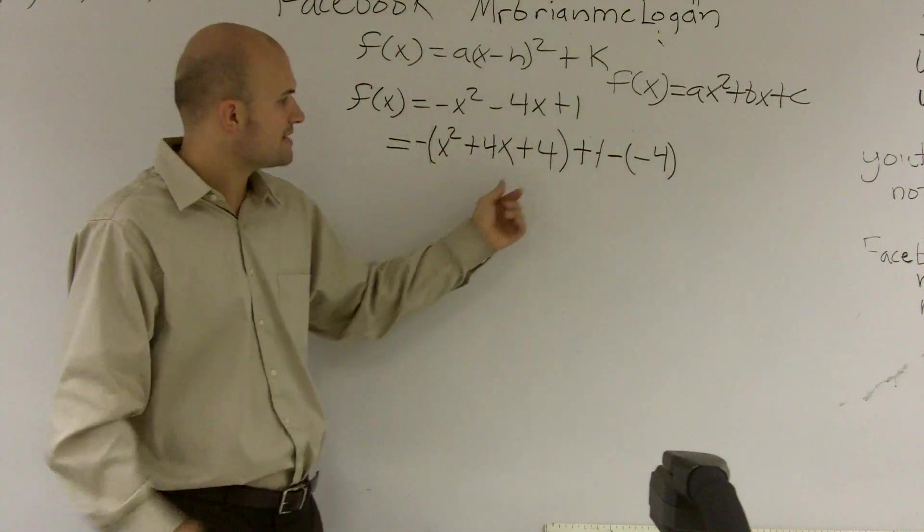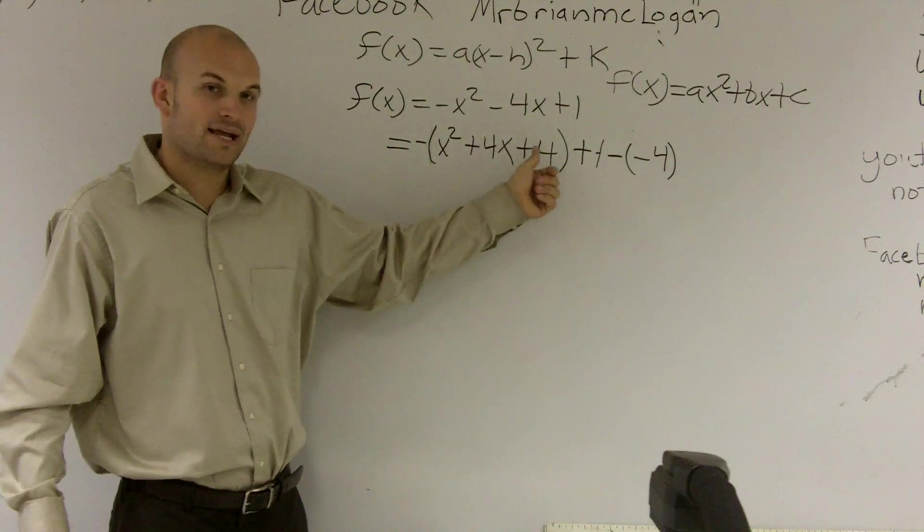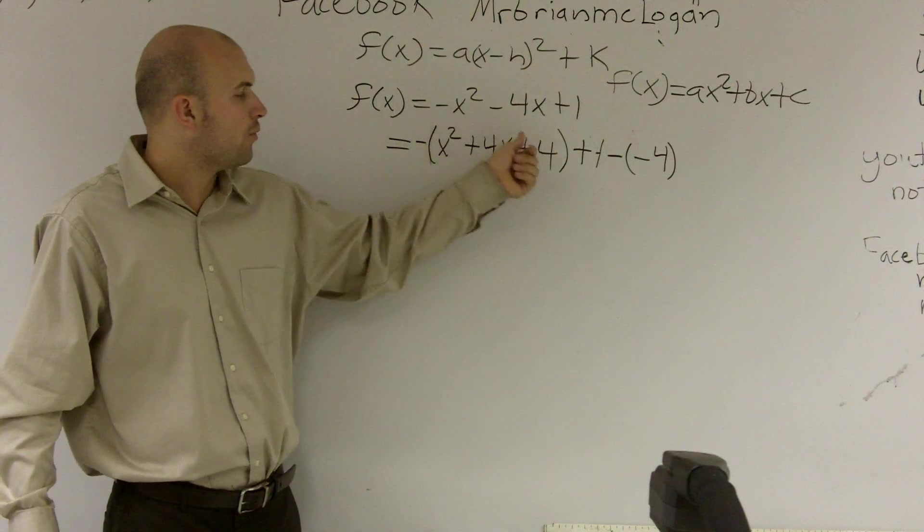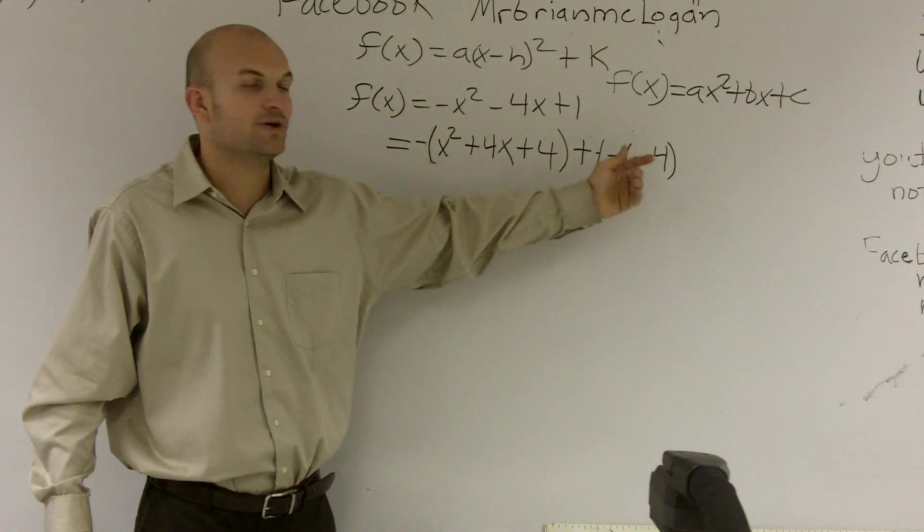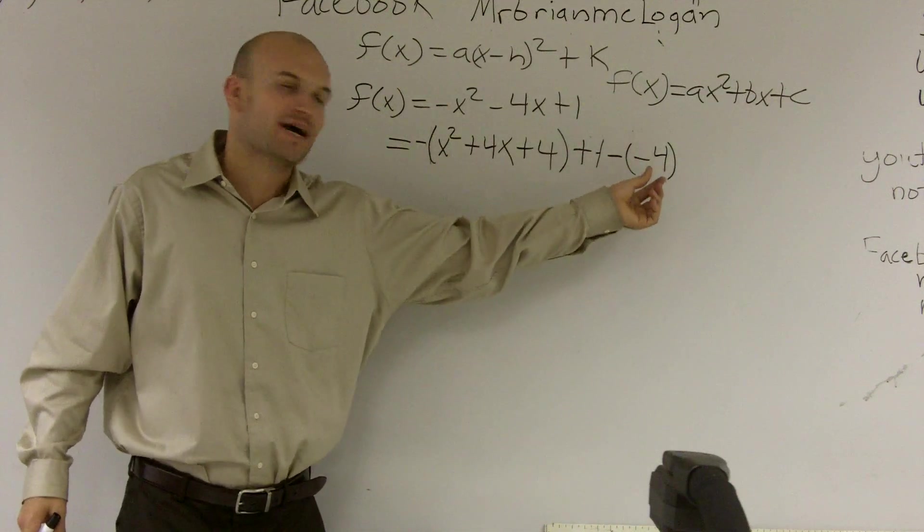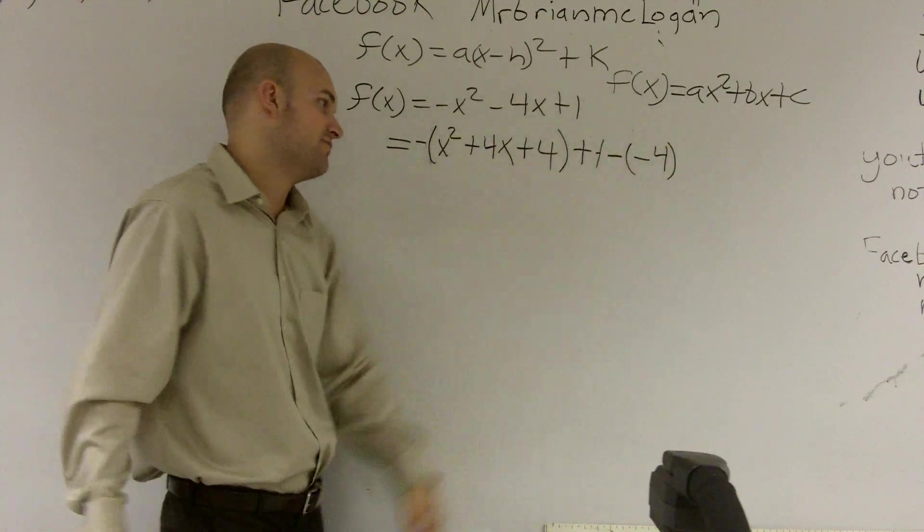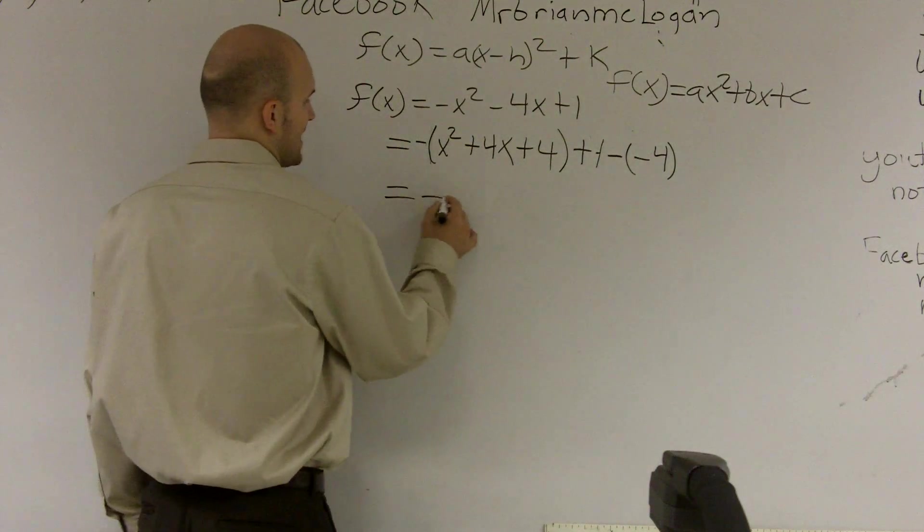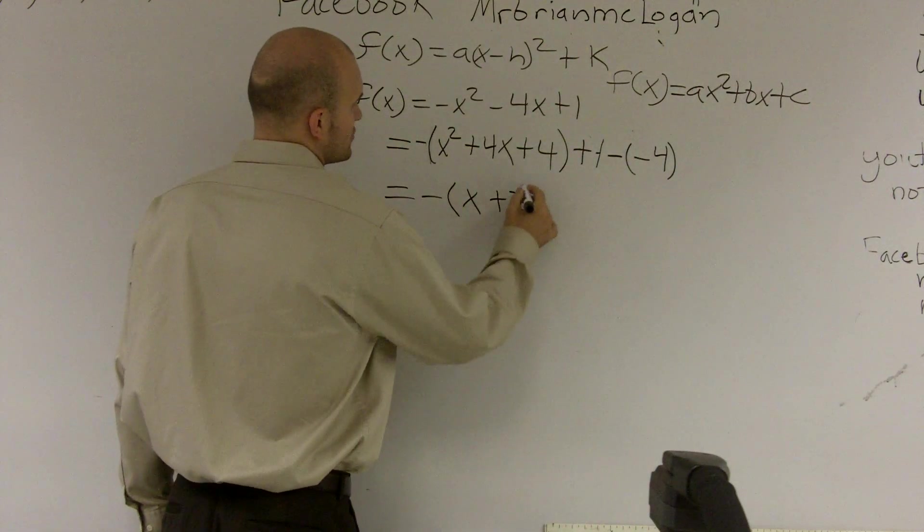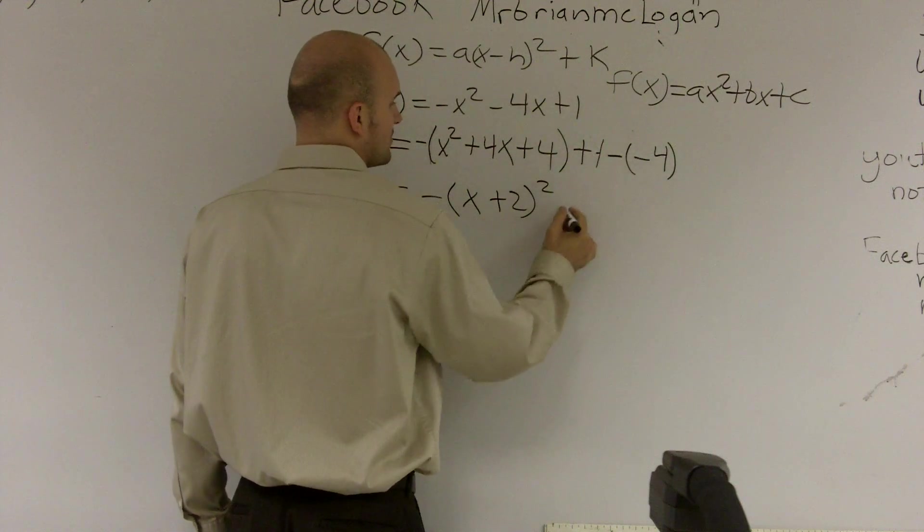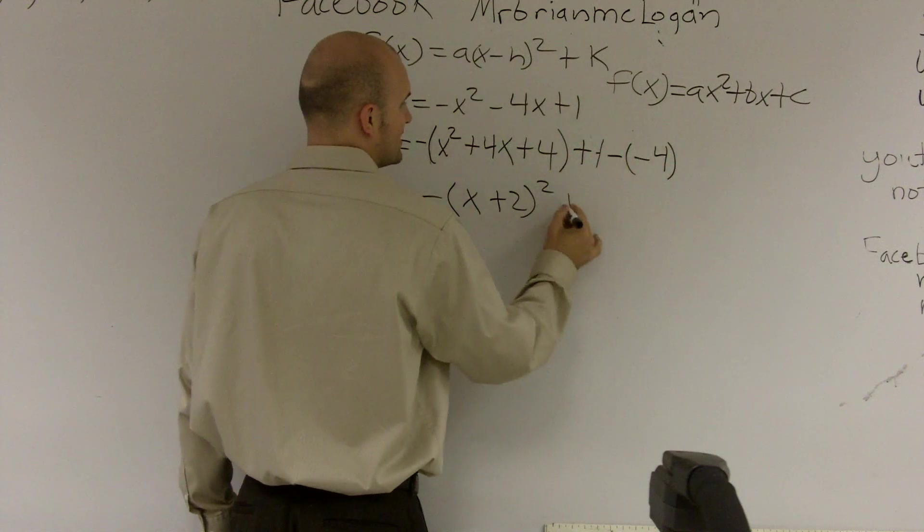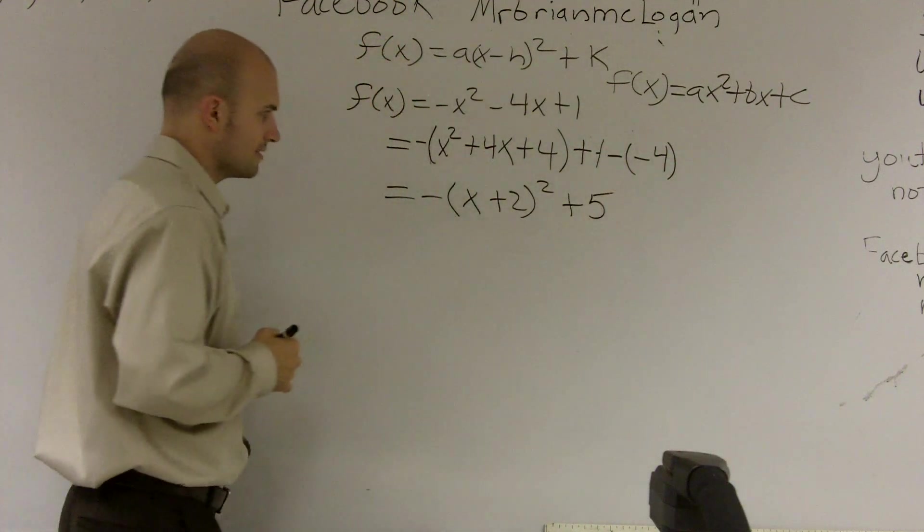I should make sure that I'm subtracting a negative 4. Because, again, I'll say it one more time, I added a 4 inside the parentheses. But when you multiply that negative 1 times 4, I'm actually subtracting a 4. So really, I'm going to want to make sure I'm adding a 4 on the outside. Well, a double negative is like adding 4. Therefore, I have negative x plus 2 squared, like I wrote before. 1 minus negative 4 is going to give you 5.